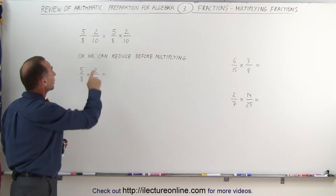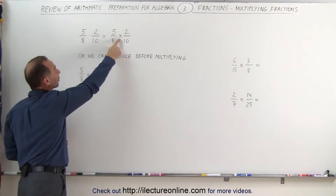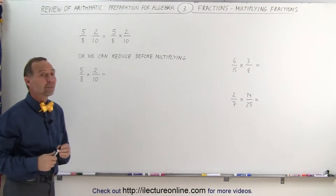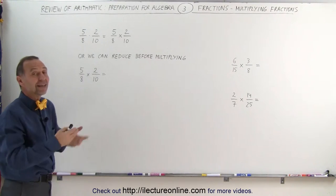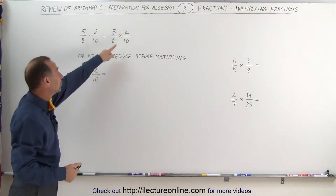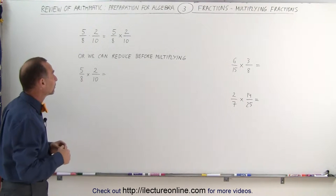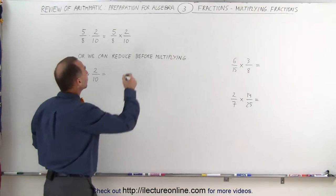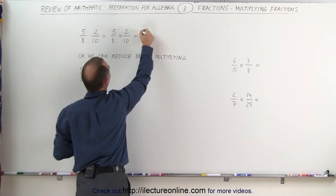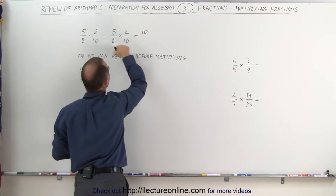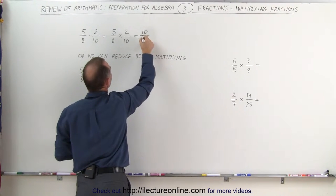Also notice that here we use a dot and there we use a little multiplication symbol, and it turns out that's really the same thing. So when you see a dot or multiplication symbol, it's exactly the same thing. So what we need to do is multiply the numerators together: 2 times 5 is 10. Multiply the denominators together: 8 times 10 is 80.